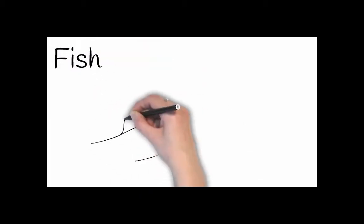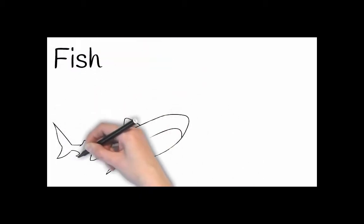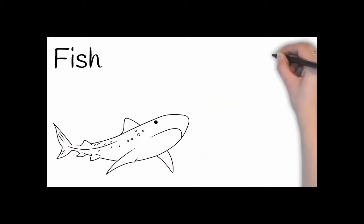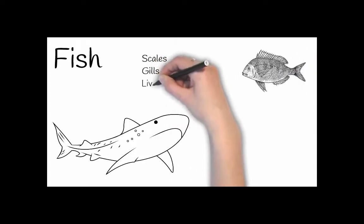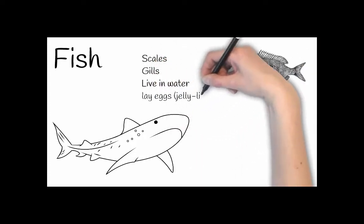Fish have scales, they have gills, they live in water, they also lay eggs and these are jelly-like eggs, and they are also cold-blooded, ectothermic.